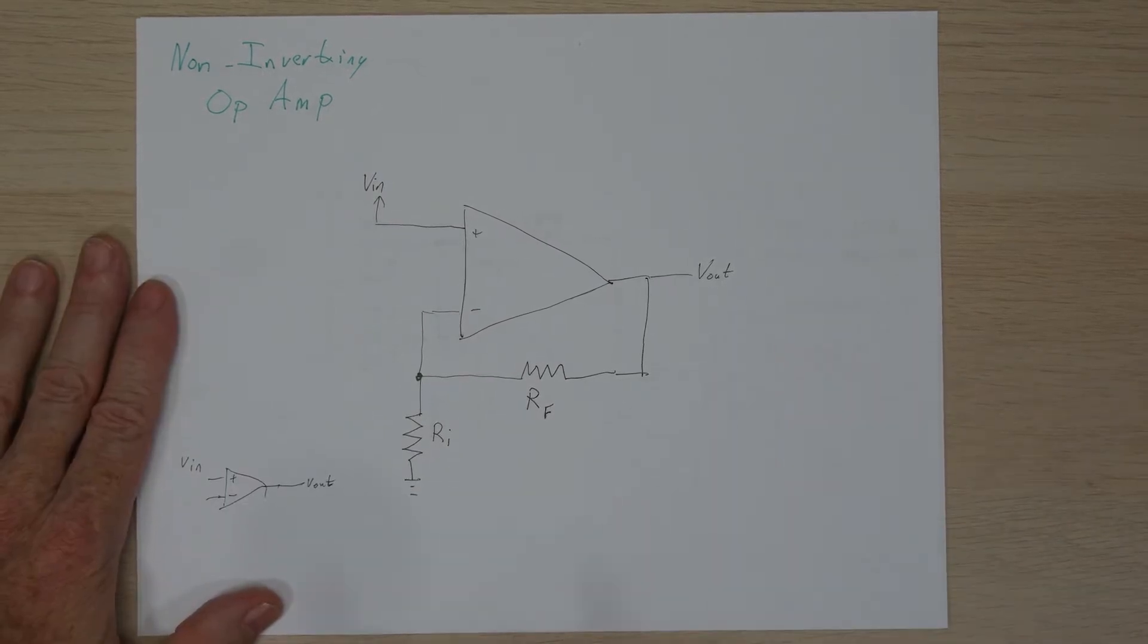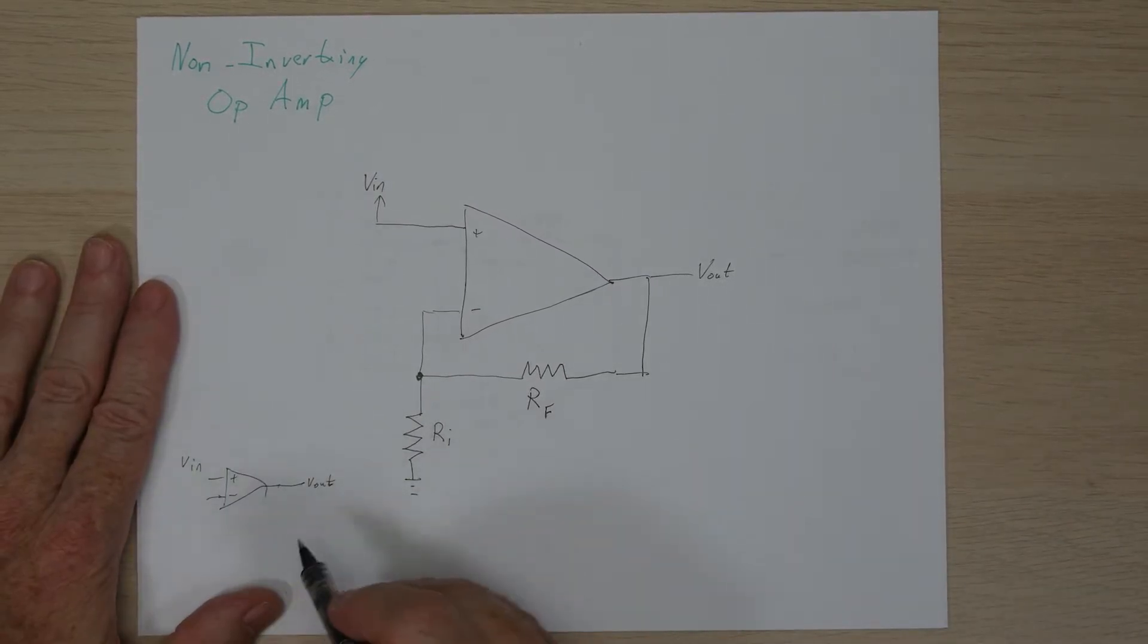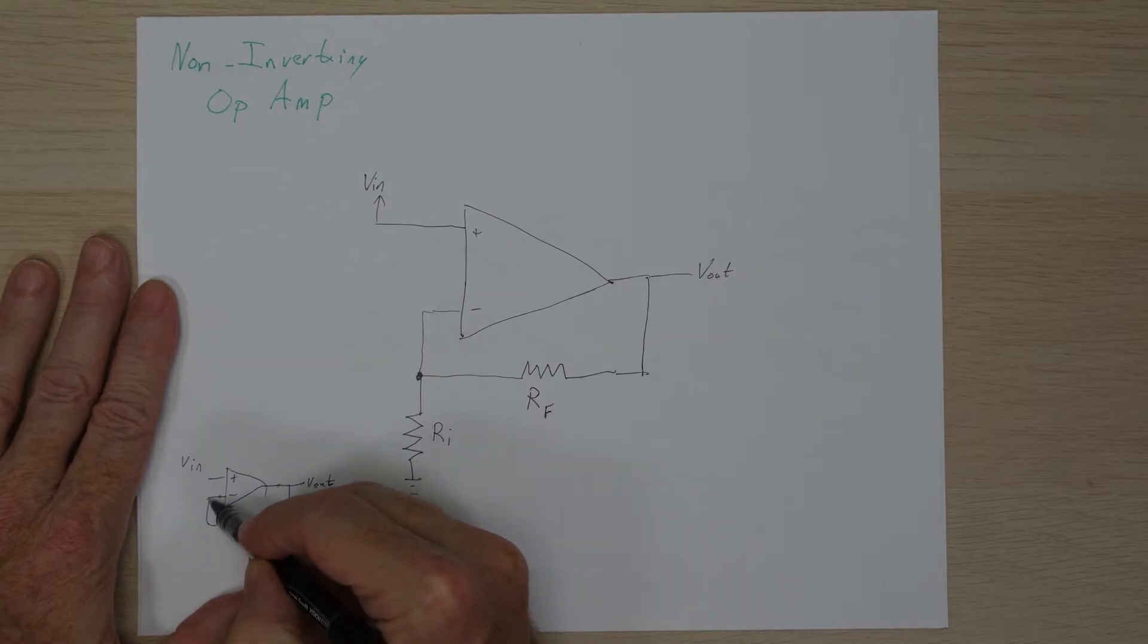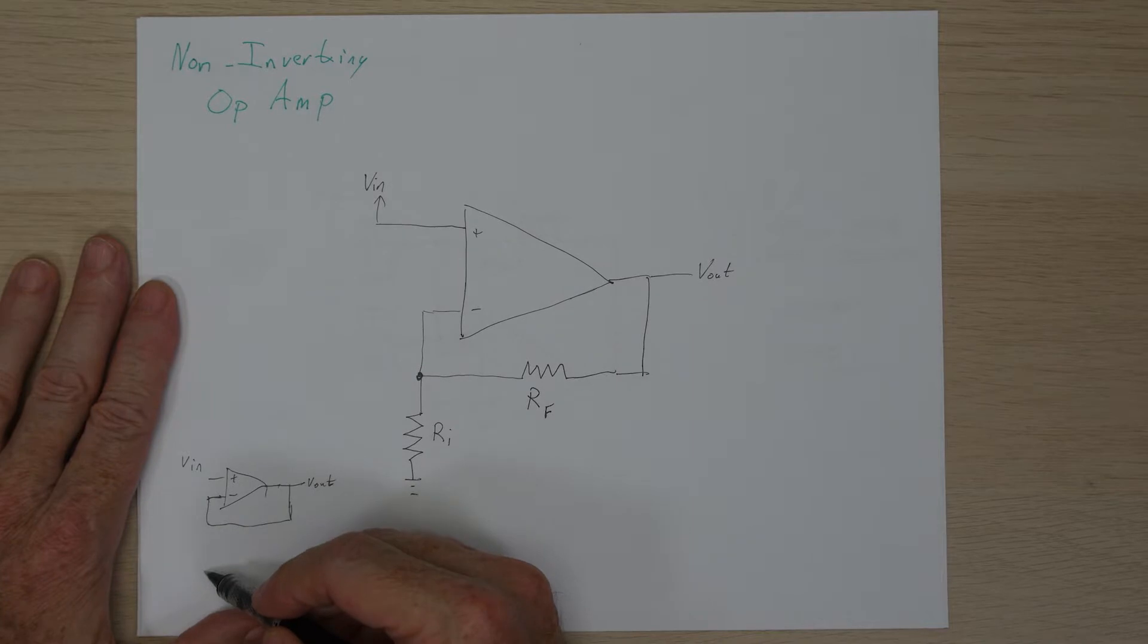So let's go ahead and take a look at a real simple case of this where we have the VN from here. We're going to go ahead and make this feedback resistor be just a straight wire, which means a resistance of zero. And then we won't have anything going to ground here, which would mean a resistance of infinity.